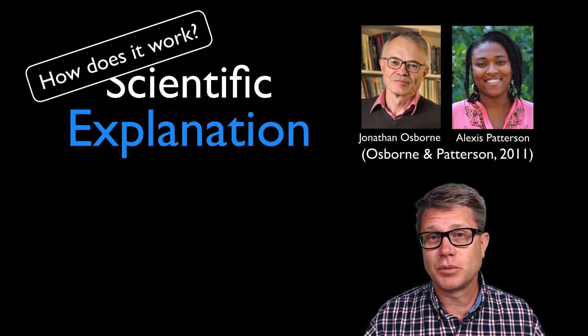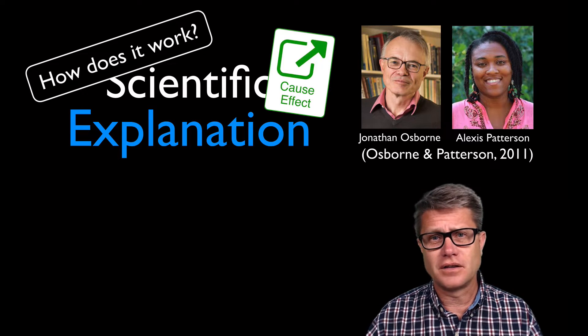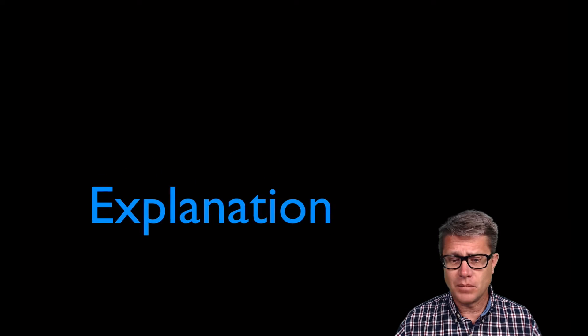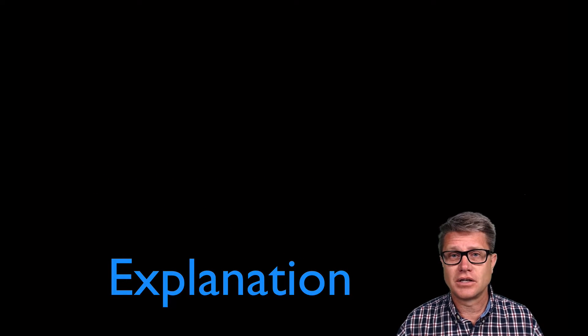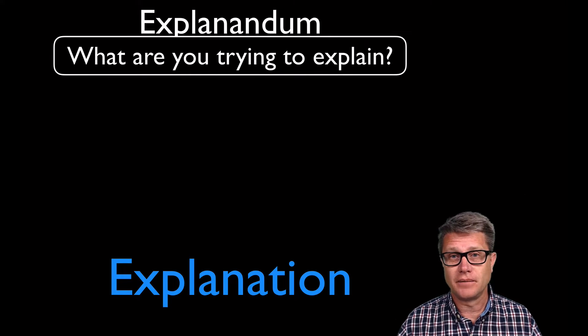When you're coming up with an explanation, you're determining a cause and a mechanism for an effect that is not in doubt. What does that mean? Well, every explanation is going to have an explanandum, which is essentially what you're trying to explain.